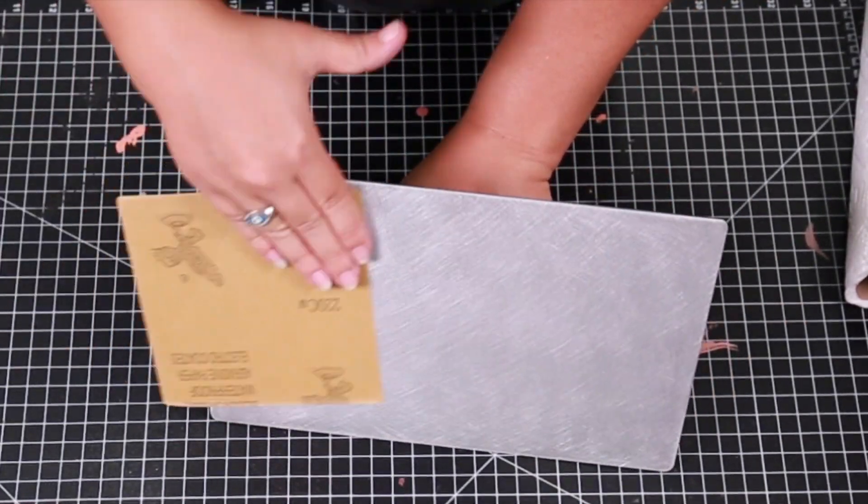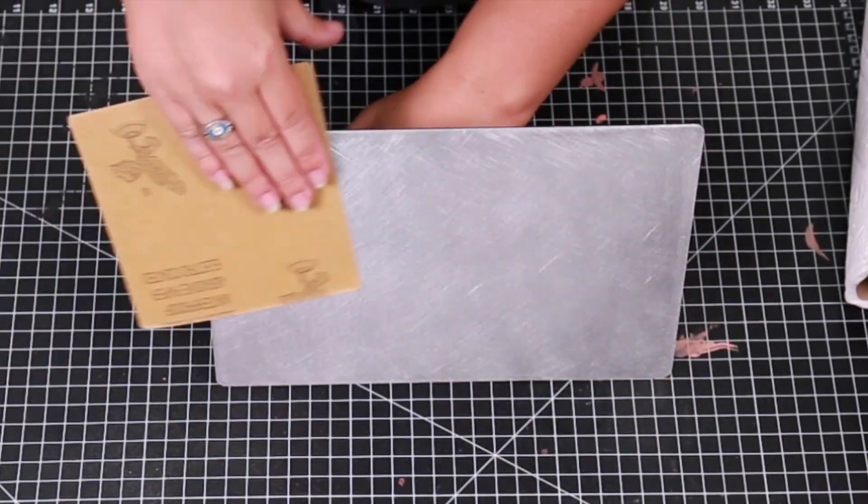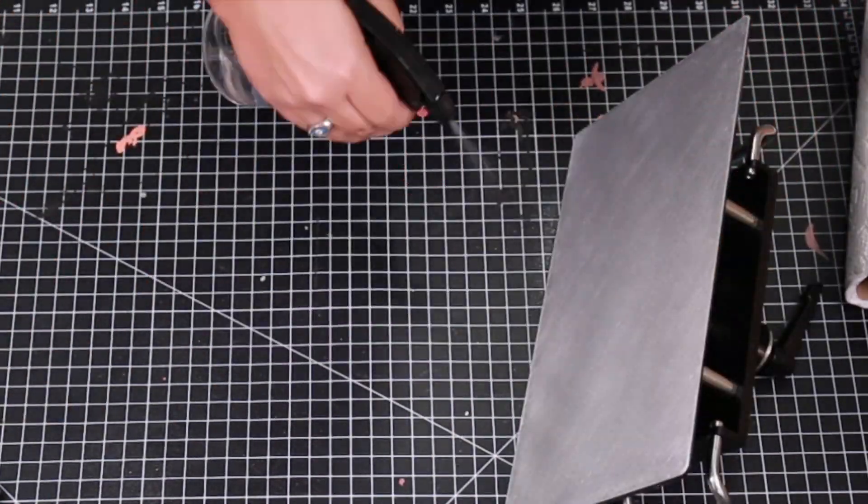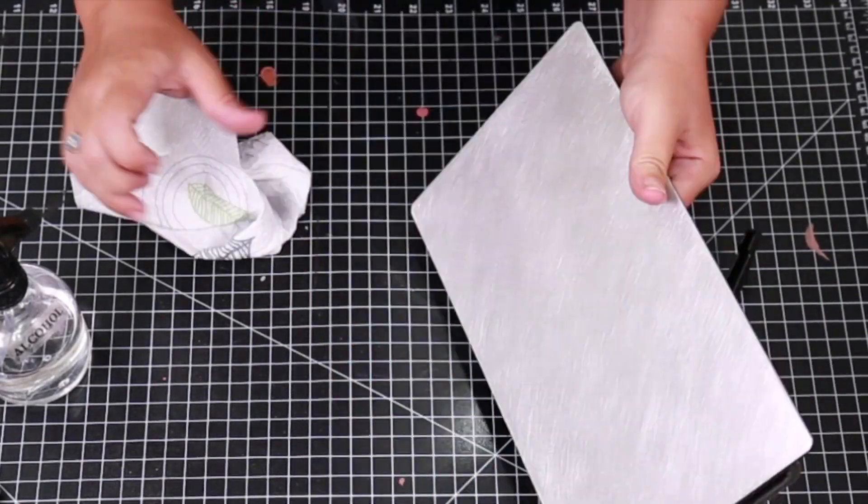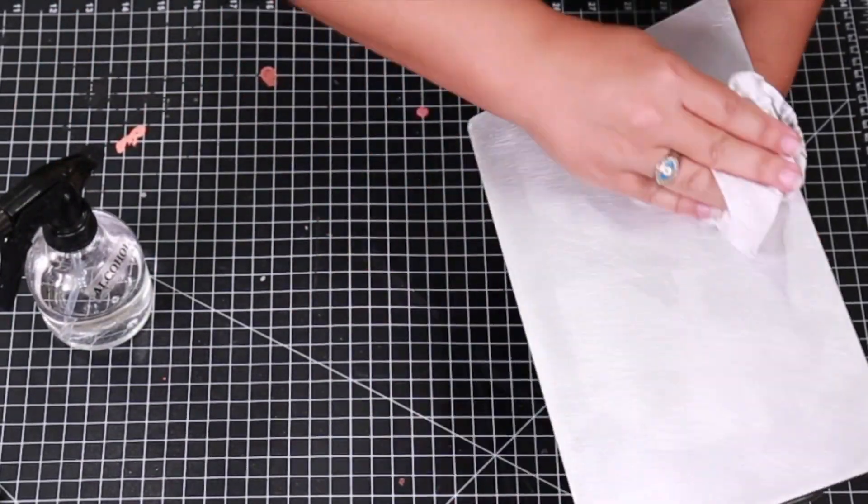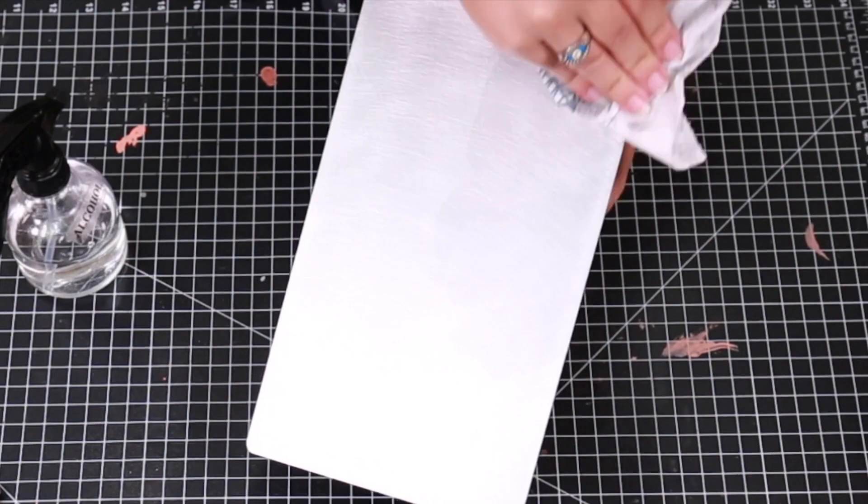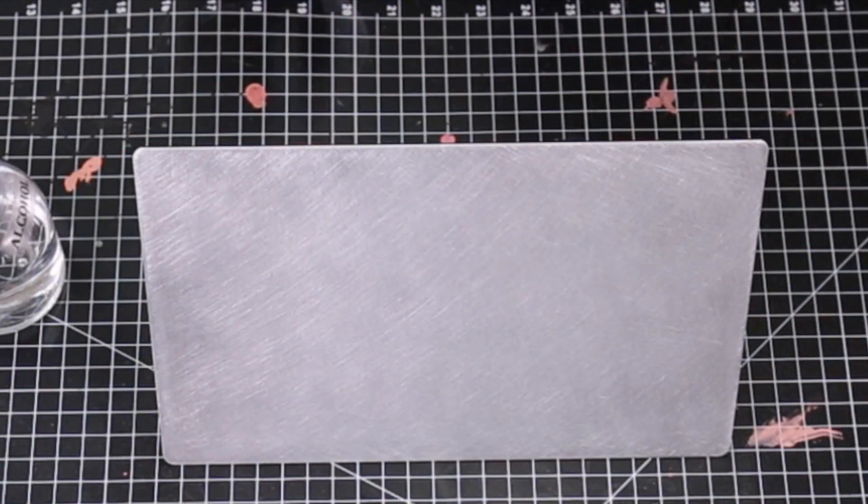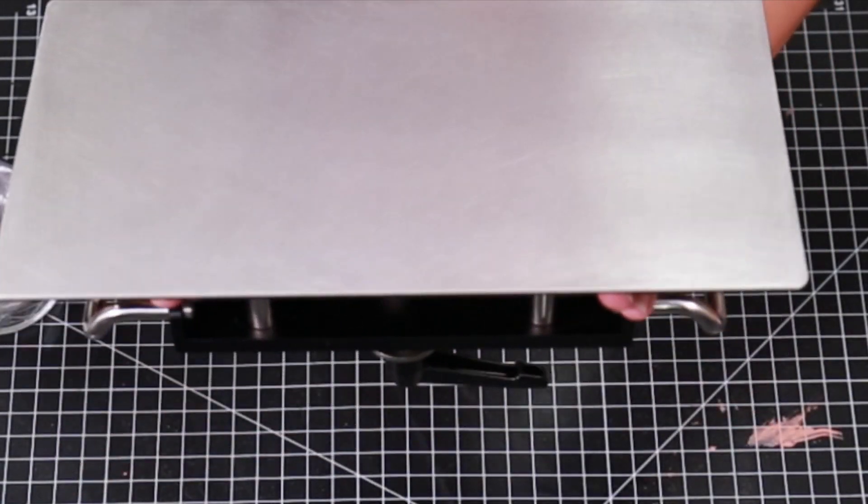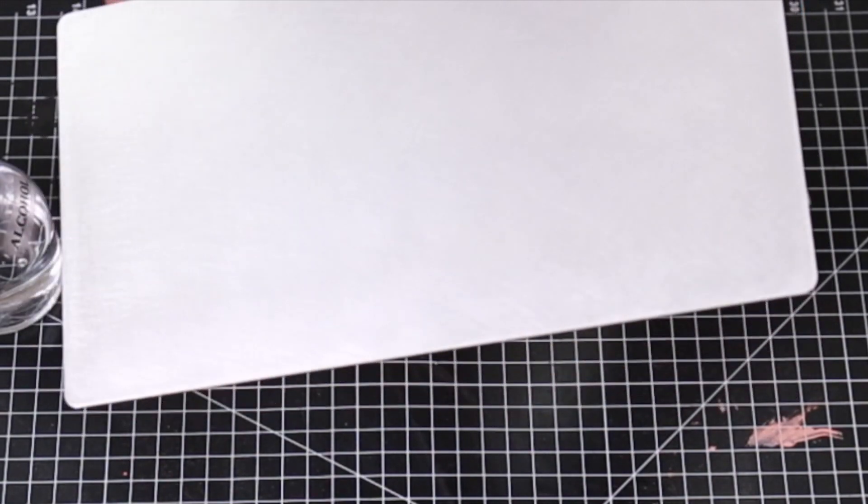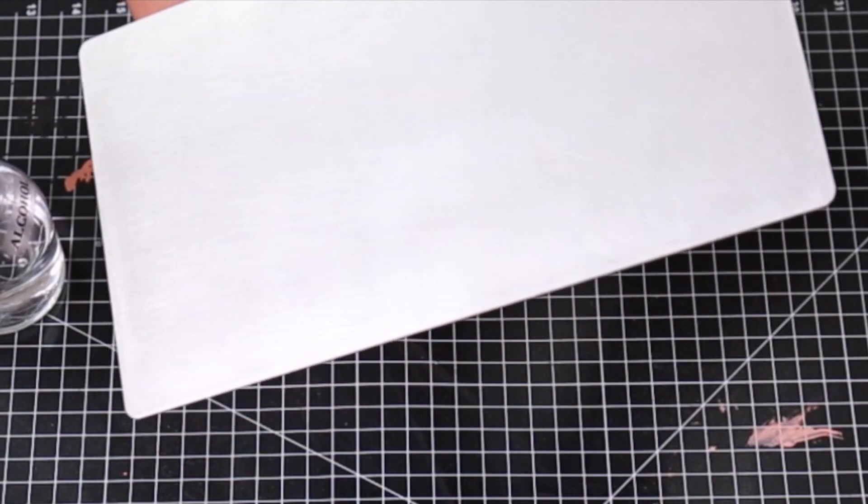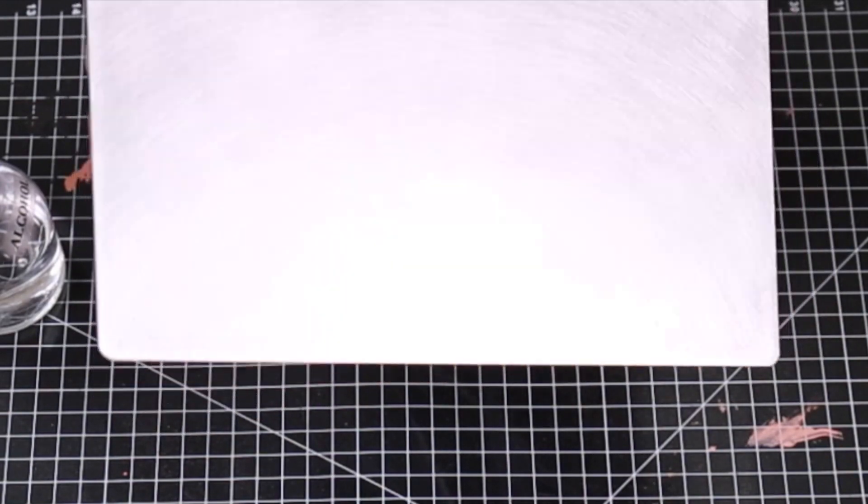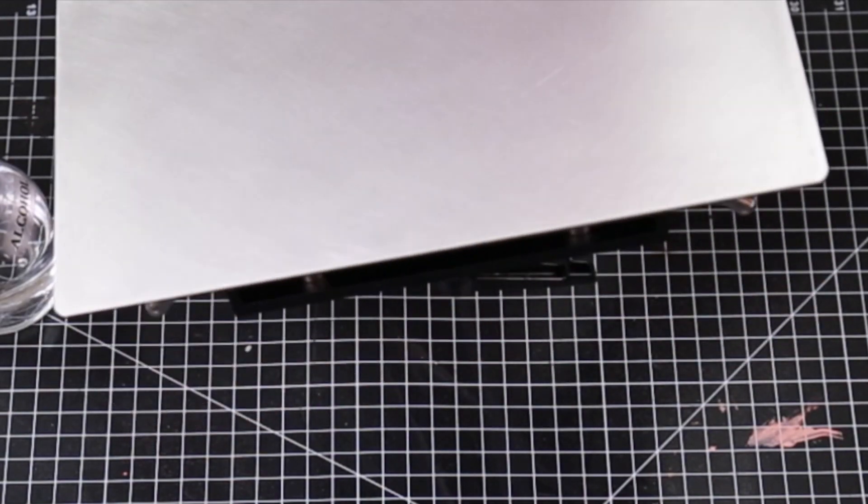And then I used the sandpaper that Wambam provided to really just go in circles and get the surface all cleared of everything. And then I would also use alcohol to kind of spray off any of that residue, making sure that everything looks good. I put one last layer of alcohol and cleaned it off before moving on to the next step, making sure that the surface is completely clean and ready to add on the magnet.